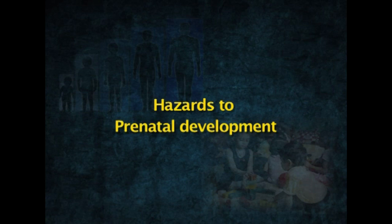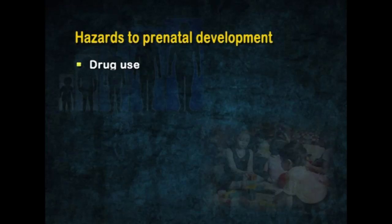After understanding the prenatal period and its different stages, let us now look at the hazards to prenatal development. The mother's womb protects most babies as they are developing, but despite this protection, the environment can affect the embryo or fetus in many documented ways. Regarding drug use, a teratogen is an agent that can potentially cause a birth defect or negatively alter cognitive and behavioral outcomes.